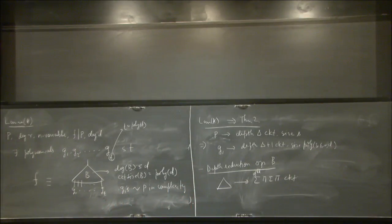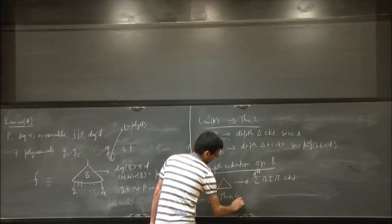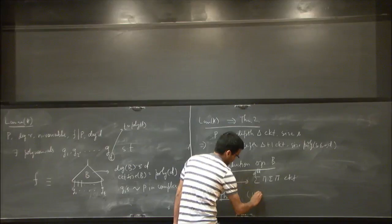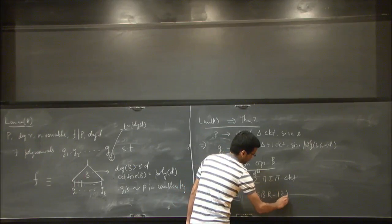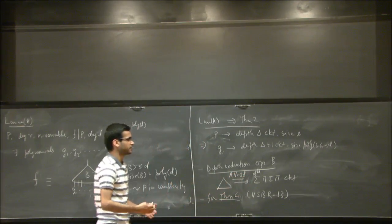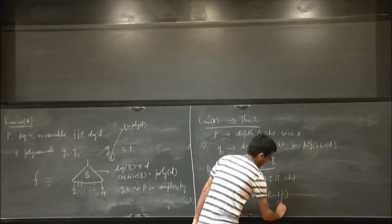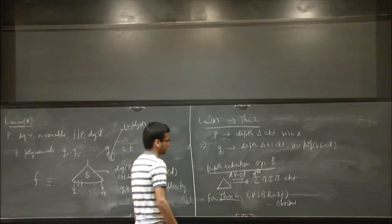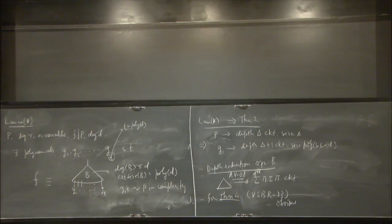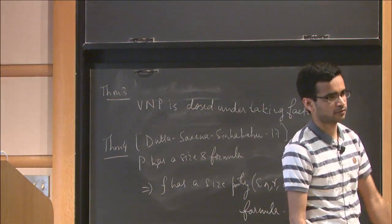Similarly, Theorem 4 also follows easily. We apply another depth reduction result — VSBR, which is Agrawal-Vinay. What VSBR says is that any circuit of size S and degree D can be converted to a formula of size S to the log D. That is why D to the log D appears. And a similar result for algebraic branching programs also follows immediately from here.